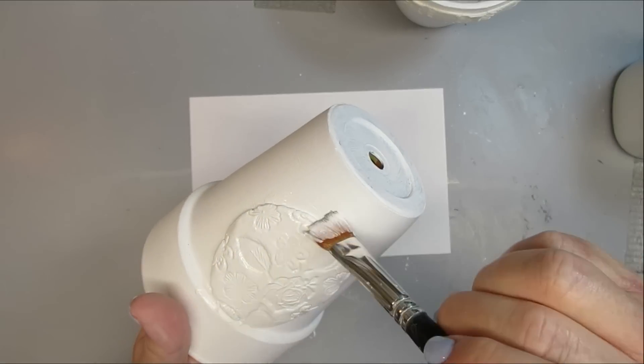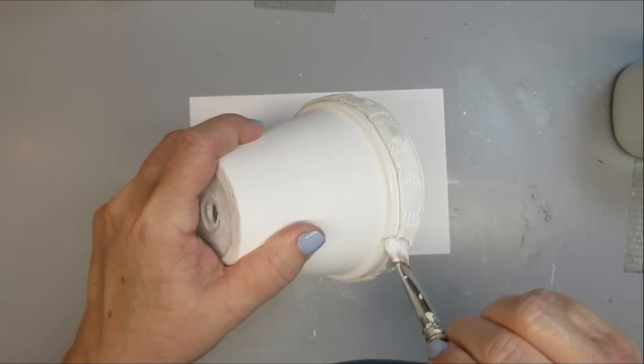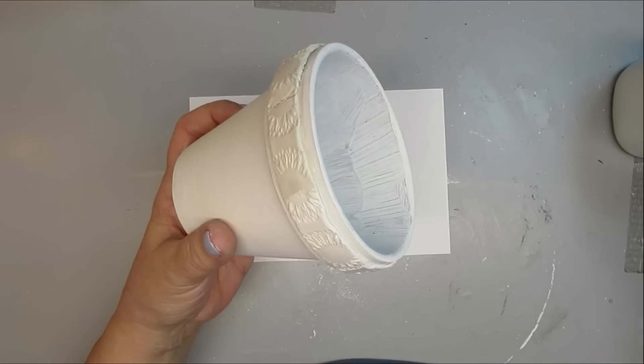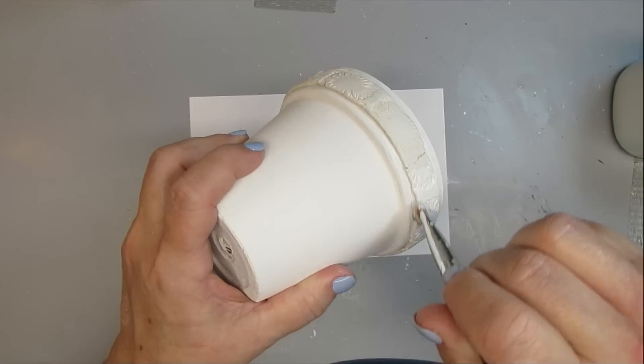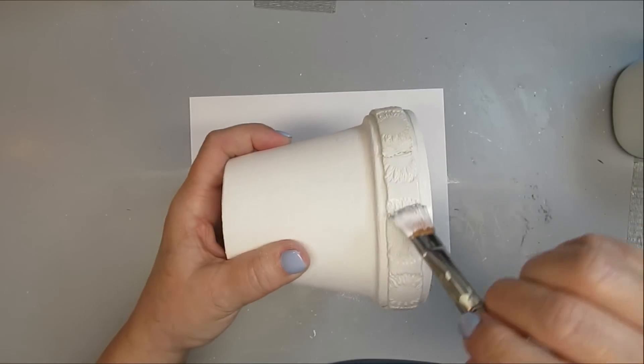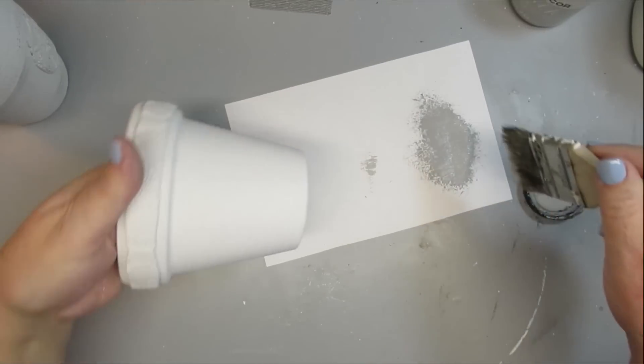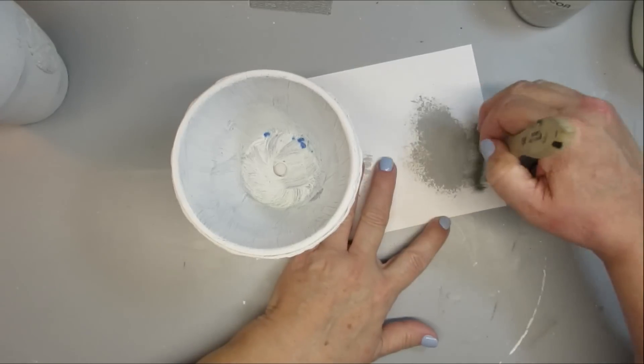Now I'm going over all of the clay areas with just one coat of white chalk paint just to make them look the same color. It's so pretty just the way it is. I just love how these turned out.